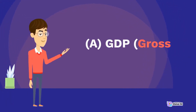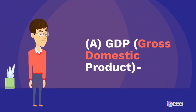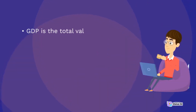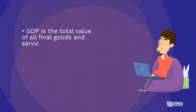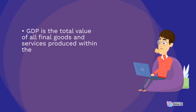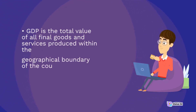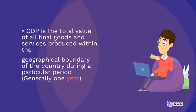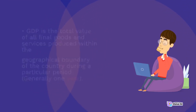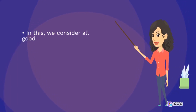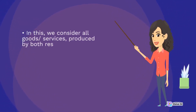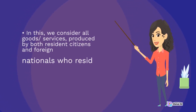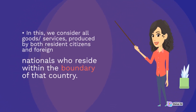GDP – Gross Domestic Product. GDP is the total value of all final goods and services produced within the geographical boundary of the country during a particular period, generally one year. In this, we consider all goods and services produced by both resident citizens and foreign nationals who reside within the boundary of that country.